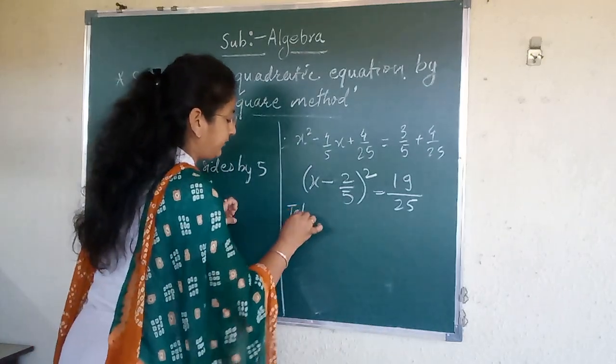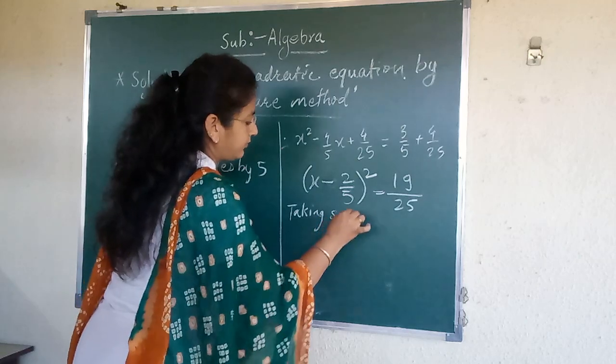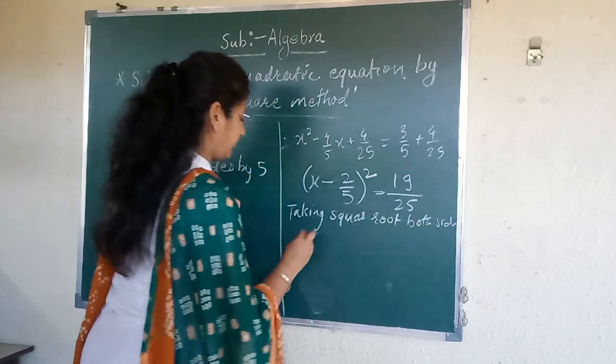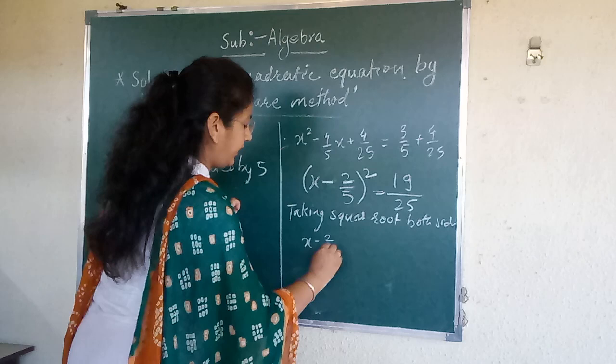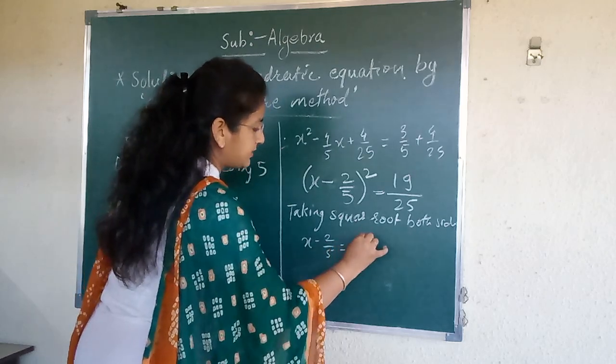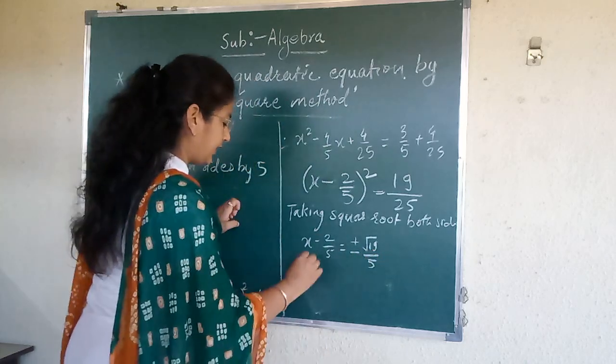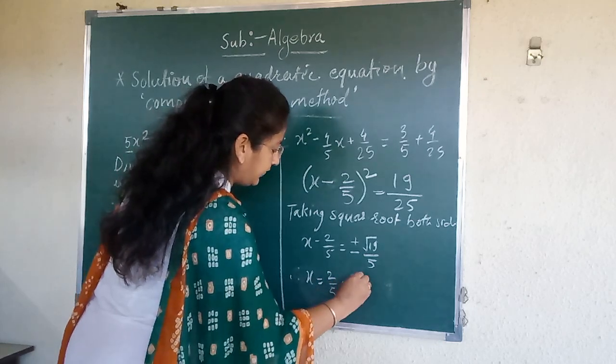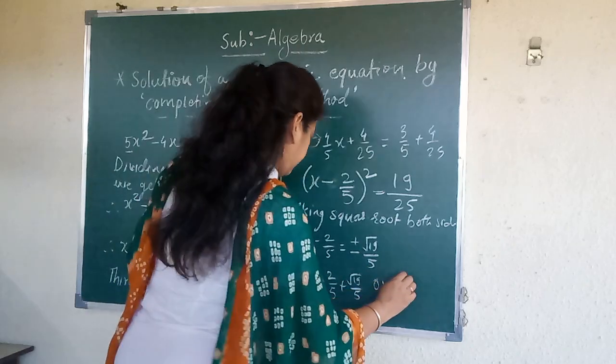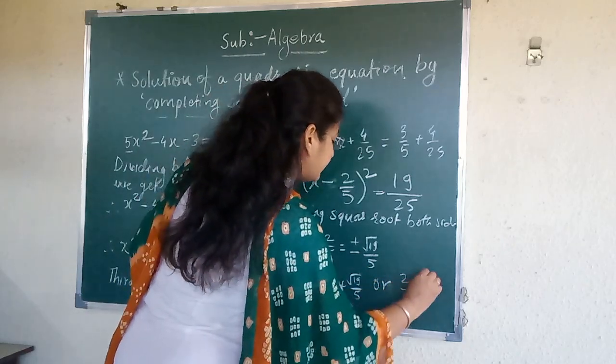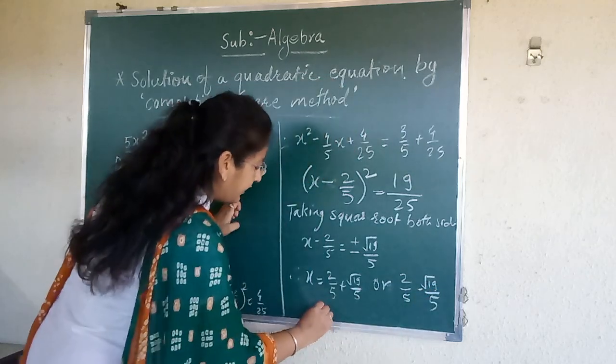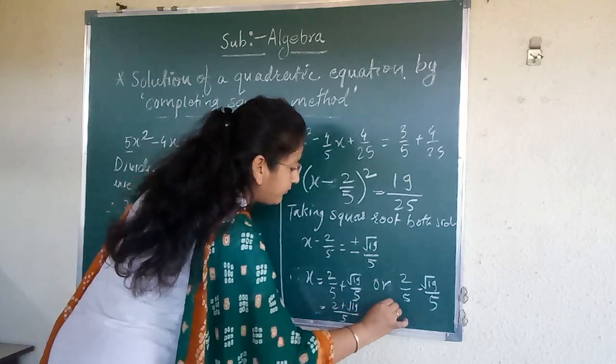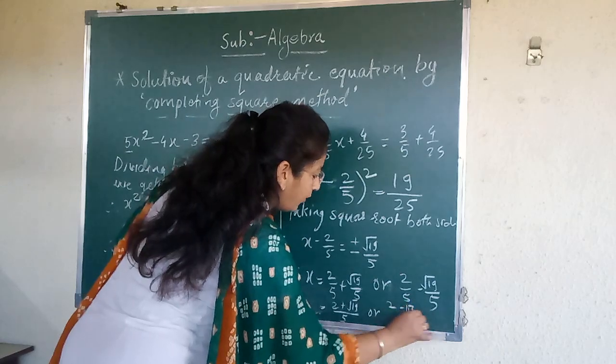Next, taking square root both the sides. x - 2/5 = ±√19/5. Therefore roots are x = 2/5 + √19/5 or 2/5 - √19/5. This we can write like this way also: (2 + √19)/5 or (2 - √19)/5.